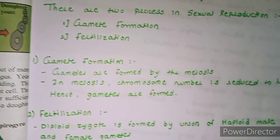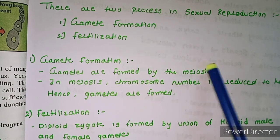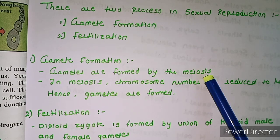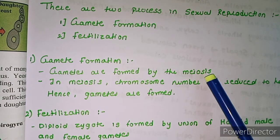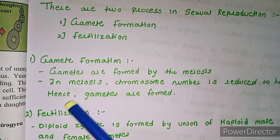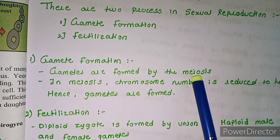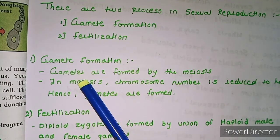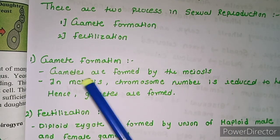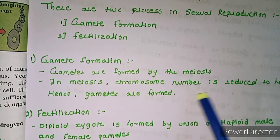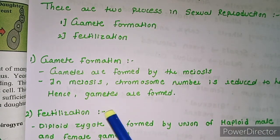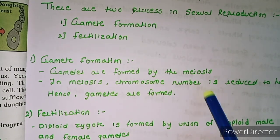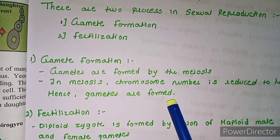Gametes are formed by meiosis. Meiosis is the reductional division, which forms four daughter cells. After meiosis — reductional division — male and female gametes form. In meiosis, the chromosome number is reduced to half, and hence the gametes are formed.